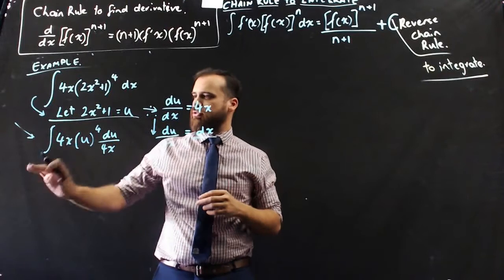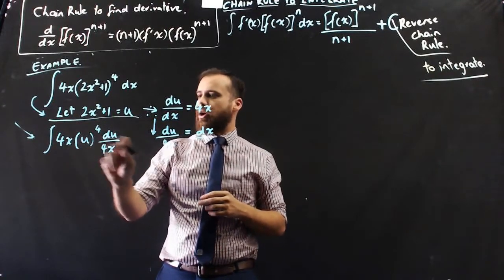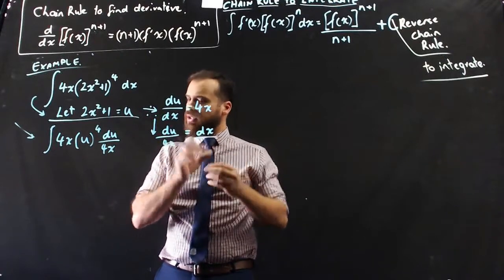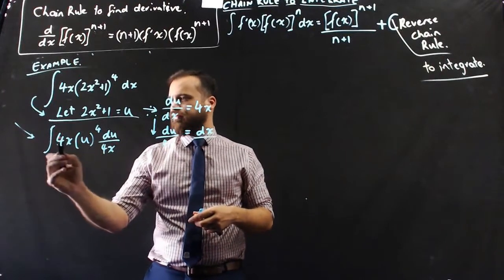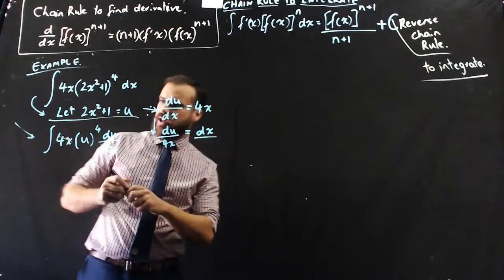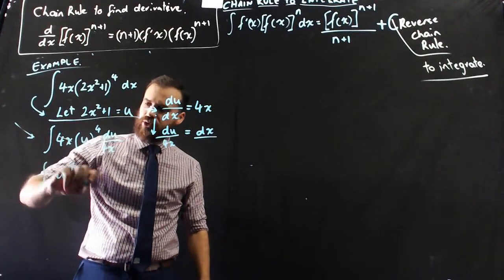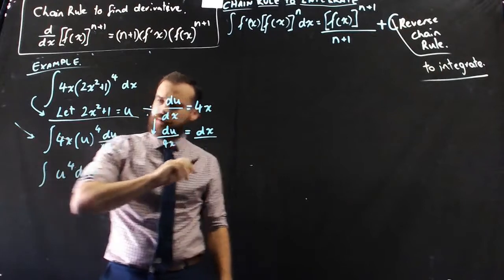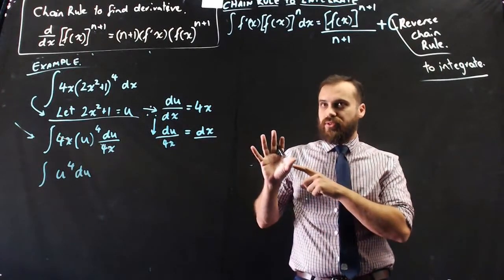Now, I've got the integral of 4x bracket u to the 4 times du over 4x. So, if you're looking really carefully, we've got a 4x times and a 4x divide. This will always happen when you do something like this. So, now we have the integral of u to the 4 du. And we can start working there.